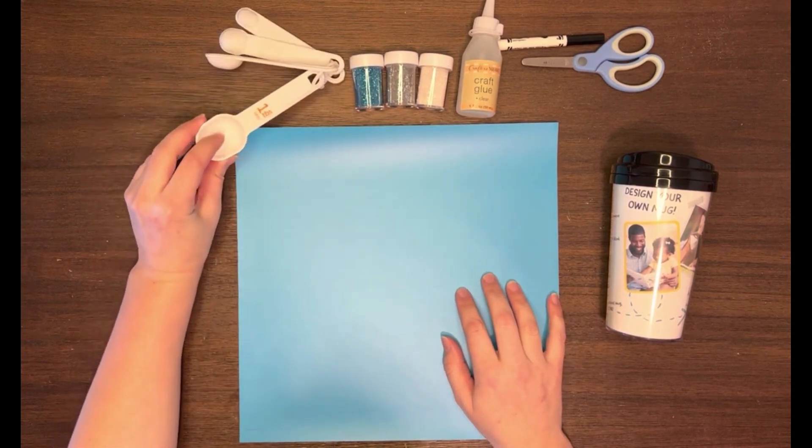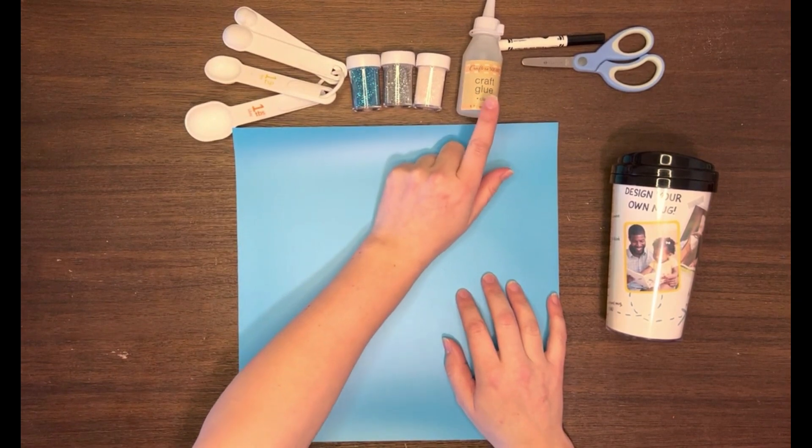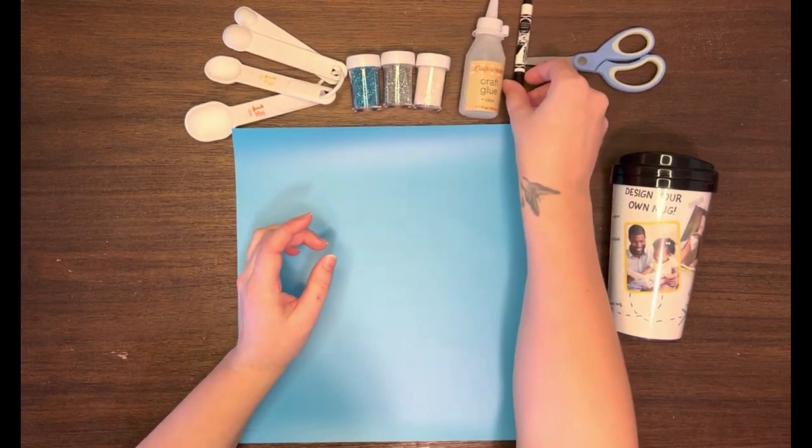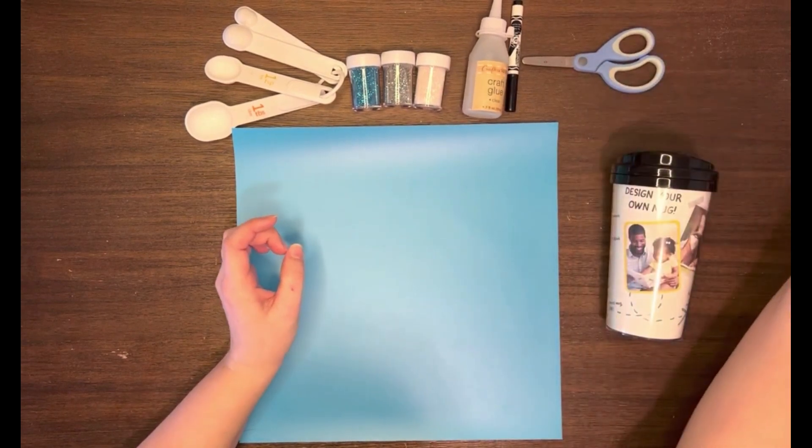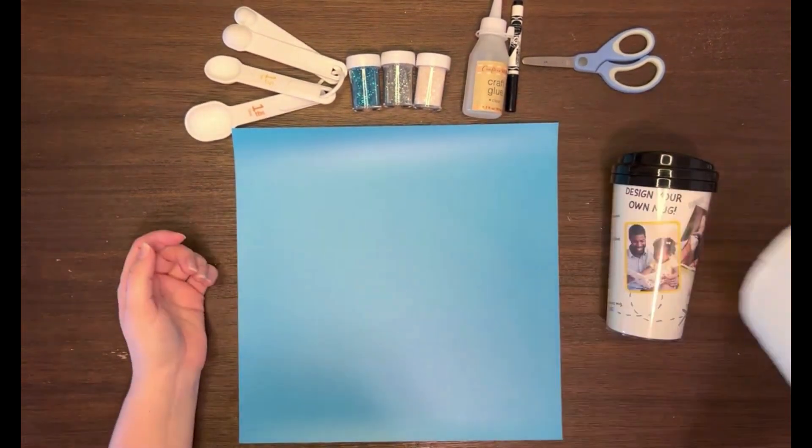You'll need measuring tablespoons, glitter, craft glue, something to trace your outline with, scissors, water, and some paper towels just in case.